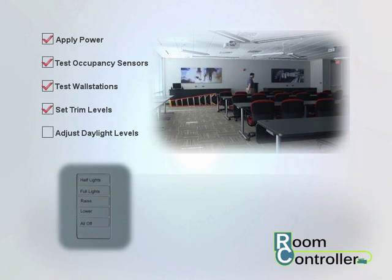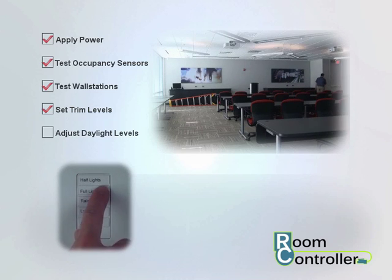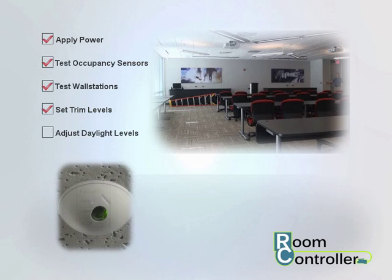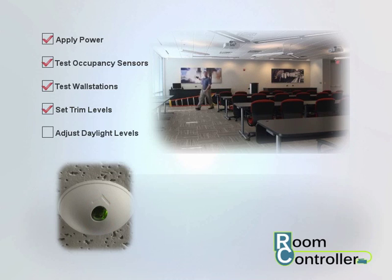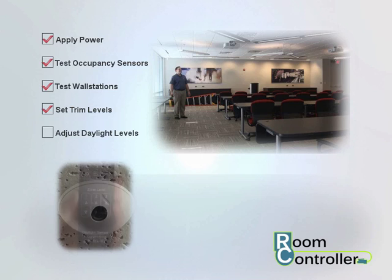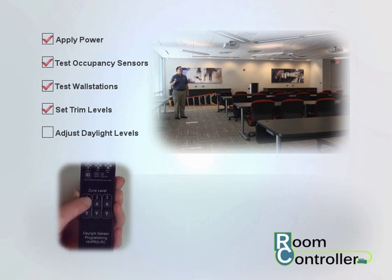Press any wall station's All Off button and then turn lighting loads on again. After lighting has been turned on, look at the daylight sensor lens. If the lens has a green LED that's on steady, refer to your installation instructions for details on making advanced daylight level adjustments. If the LED is off, point the remote at the sensor lens and press the zone's raise or lower button until the lighting is adjusted to the desired level.